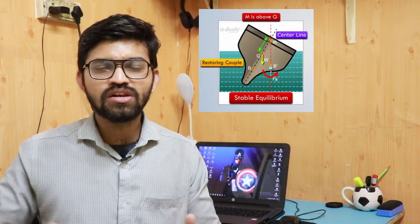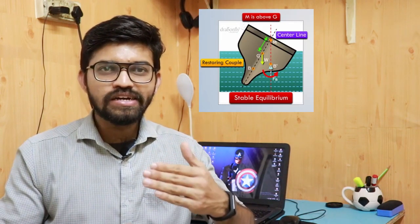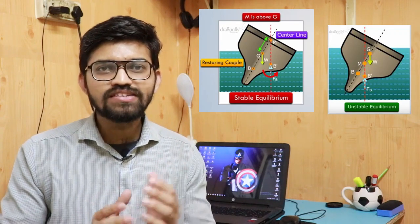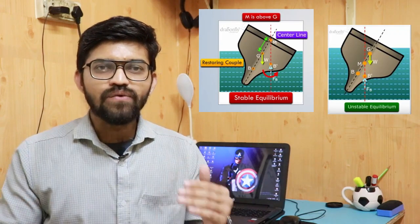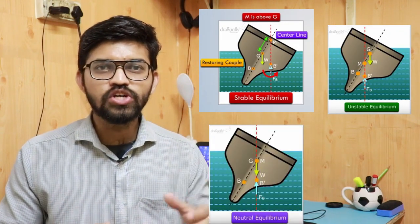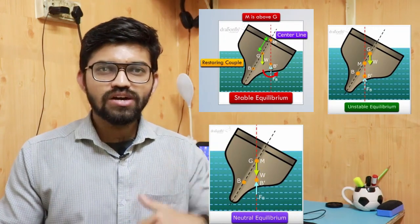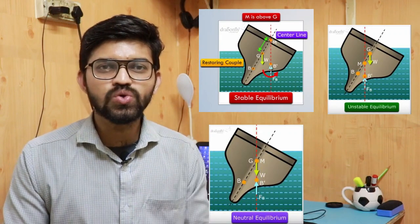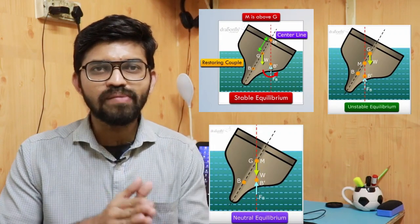There are three stages based on where the metacenter lies. When the metacenter is above the center of gravity, that is the stable equilibrium condition. When the metacenter shifts below the center of gravity, that is the unstable equilibrium condition. And when the metacenter coincides with the center of gravity, that is the neutral equilibrium condition. These three equilibrium conditions arise due to the shifting of the metacenter.